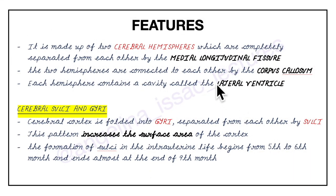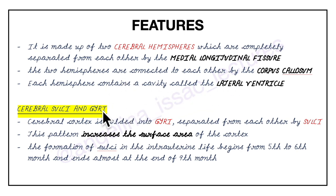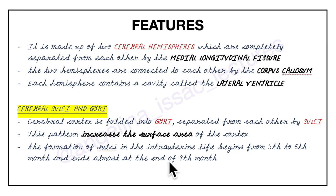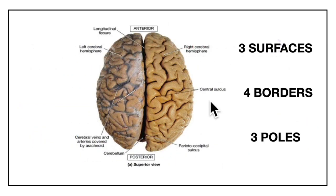To summarize: the cerebrum is made up of two cerebral hemispheres completely separated by the medial longitudinal fissure, connected by the corpus callosum, each containing a lateral ventricle. The cerebral cortex is folded into gyri separated by sulci, which increases the surface area of the cortex. Sulci formation in intrauterine life begins from the 5th to 6th month and ends at the end of the 9th month.